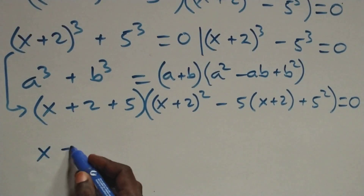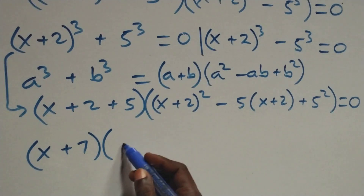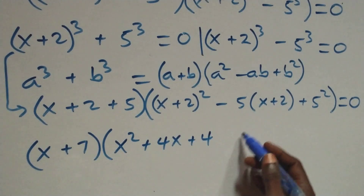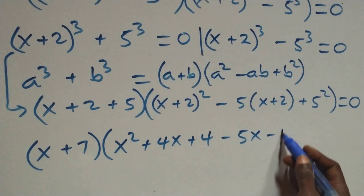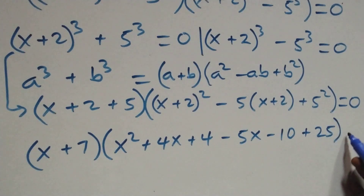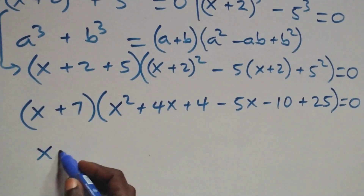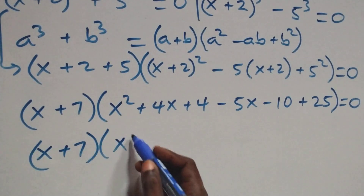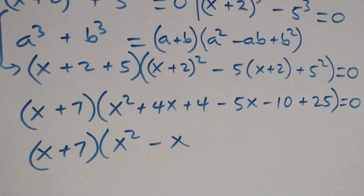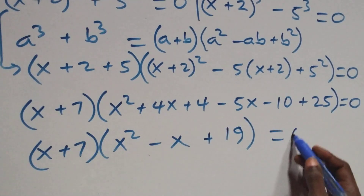This becomes (x + 7) times the bracket. Expanding: x² + 4x + 4 minus 5 open brackets giving minus 5x minus 10, then plus 25 close bracket equals to 0. Which implies (x + 7) times [x² + (4x − 5x) + (25 − 10 + 4)] = (x + 7)(x² − x + 19) = 0.